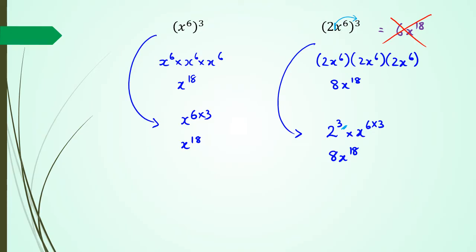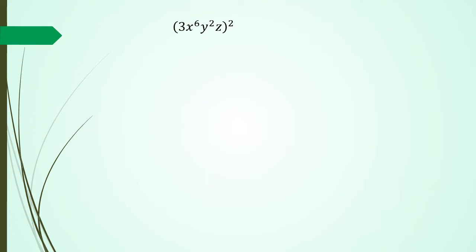You can leave your answer with the base 2, depending on the question. Now let's look at another example: (3x⁶y²z)². I don't want to write it out twice, so I'll use the quicker method. 3 is to the power of 1, so 1 times 2 gives 3 to the power of 2. Then x to the power of 6 times 2 is x to the power of 12, y squared times 2 becomes y to the power of 4, and z to the power of 1 times 2 gives z squared.